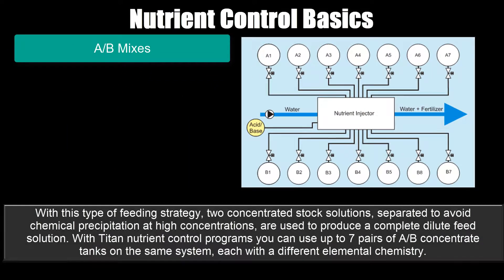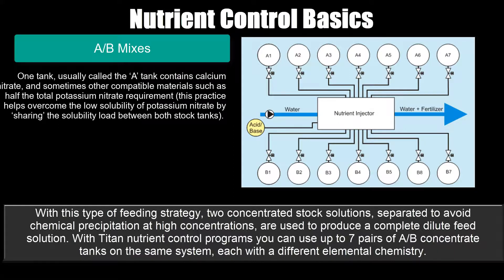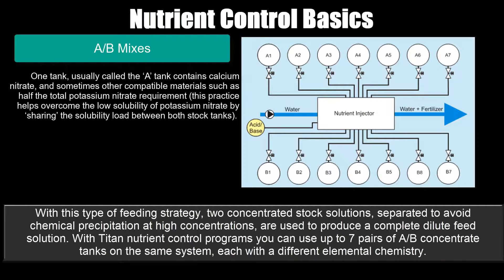With AB mixes, two concentrated stock solutions separated to avoid chemical precipitation at high concentrations are used to produce a complete dilute feed solution. The A tank contains calcium nitrate and sometimes other compatible materials such as half the total potassium nitrate requirement — this helps overcome the low solubility of potassium nitrate by sharing the solubility load between both stock tanks. The B tank generally contains the rest of the concentrates including phosphate and sulfate materials required to make up the complete dilute fertilizer formula.